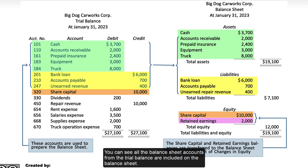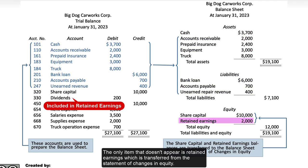You can see all the balance sheet accounts from the trial balance are included on the balance sheet. The only item that doesn't appear is retained earnings, which is transferred from the statement of changes in equity.